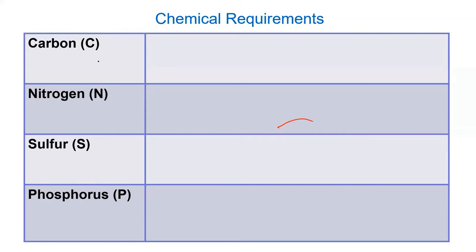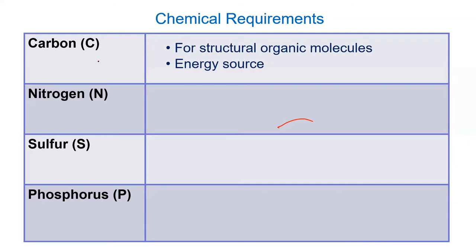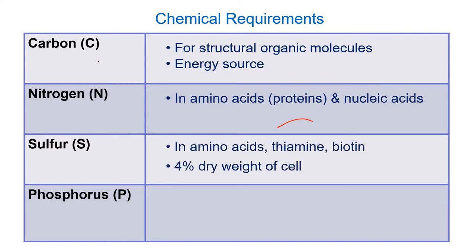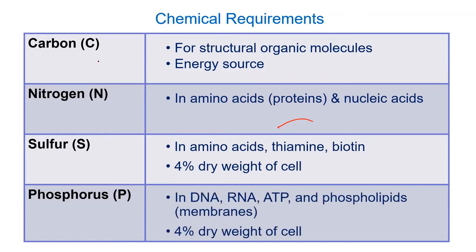Chemical requirements refer to what we're feeding these organisms. You need to provide: a carbon source like glucose for energy; nitrogen, which is part of amino acids and nucleic acids; sulfur, found in some amino acids; and phosphorus, found in nucleotides — DNA, RNA, and ATP. Organic growth factors like vitamins must also be supplied, along with trace elements. Even photosynthetic organisms, which aren't clinically relevant in this course, still need nutritional sources.